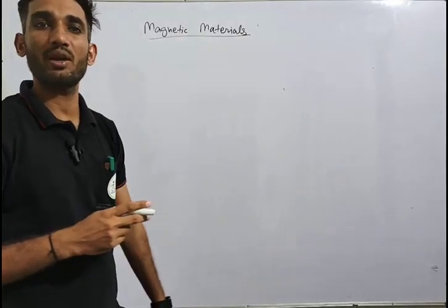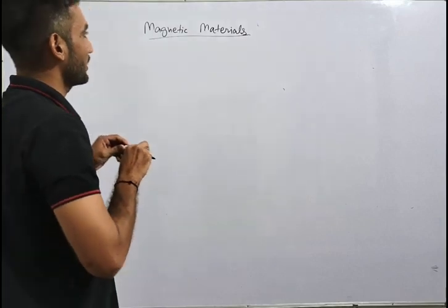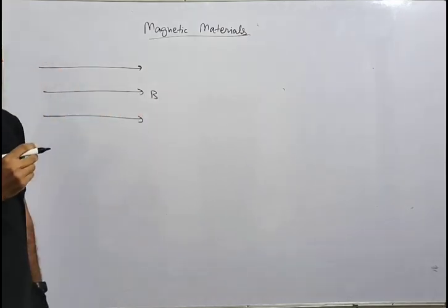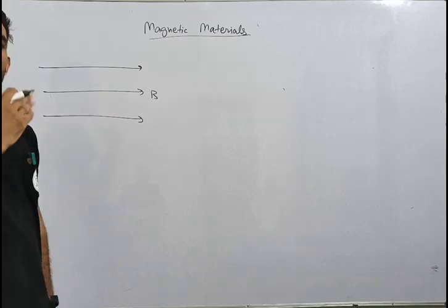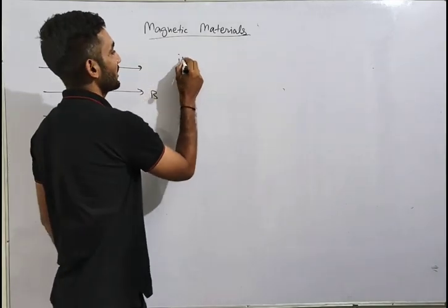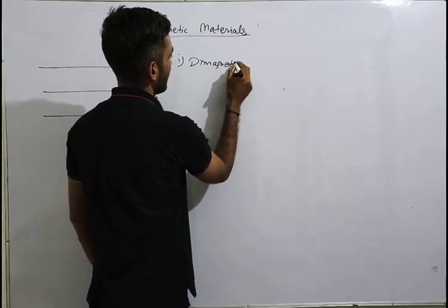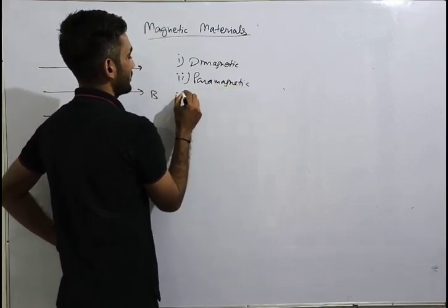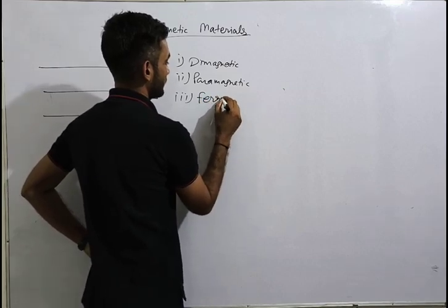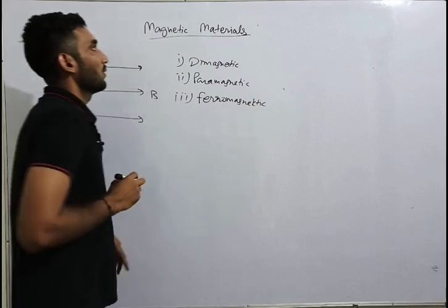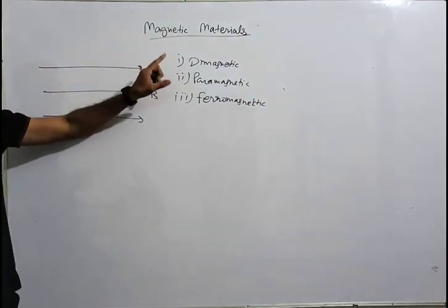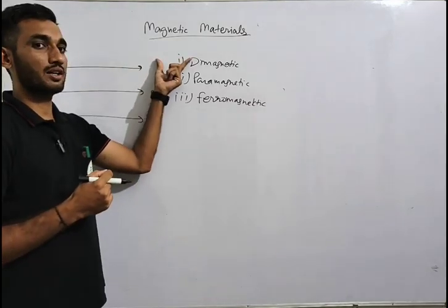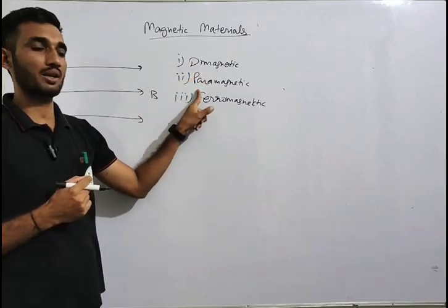Hello students, today we are going to start our new topic: magnetic materials. What is magnetic material? Whenever any material is placed in a magnetic field, how it behaves — from this, magnetic materials are classified into mainly three categories: first is diamagnetic, second is paramagnetic, and third is ferromagnetic.